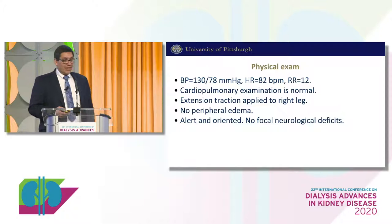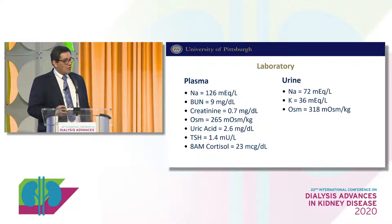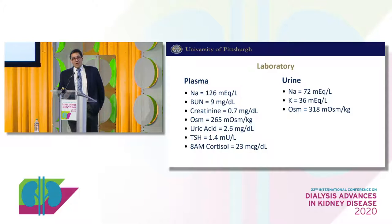Her labs: sodium is 126, BUN was 9, creatinine was 0.7, urine osmolality was 265, uric acid was low at 2.6. Her TSH was within normal limits. They also checked a cortisol, which was 23 micrograms per deciliter, effectively ruling out adrenal insufficiency. Her urine sodium was elevated at 72, and her urine osmolality was elevated at 318.